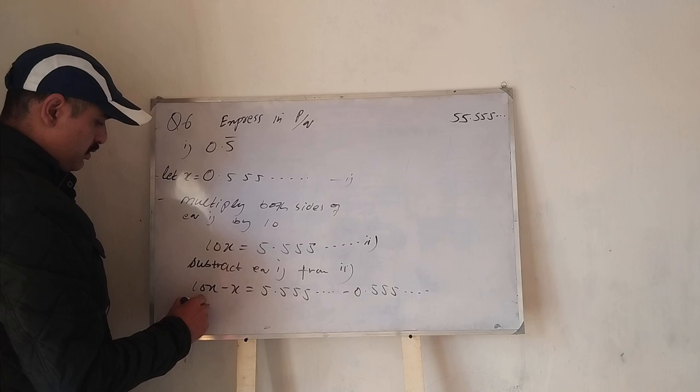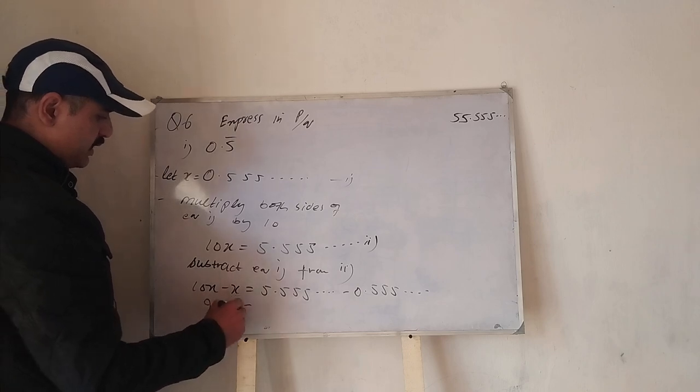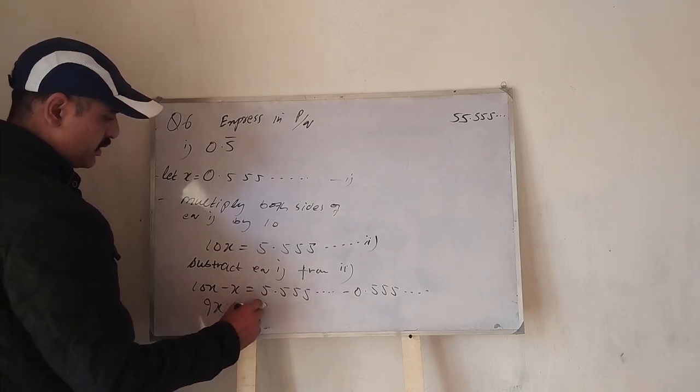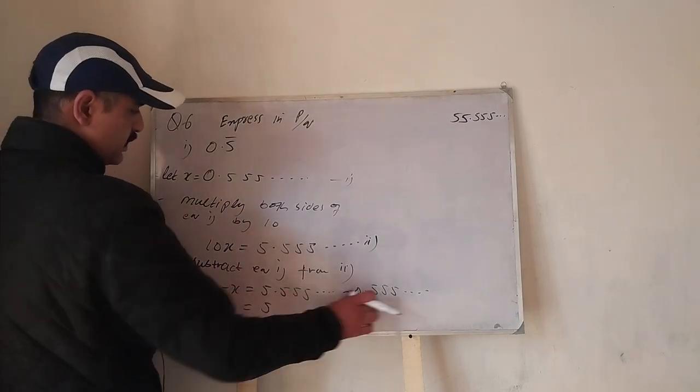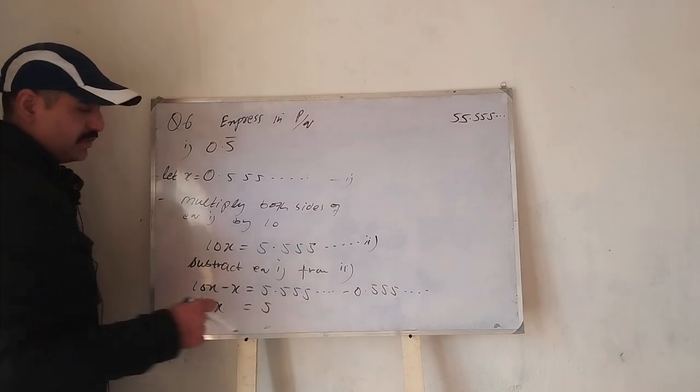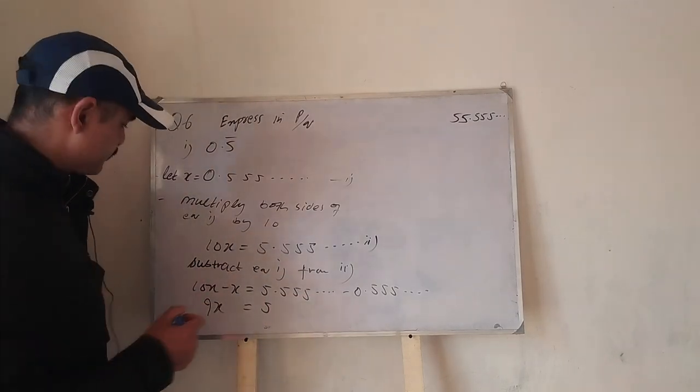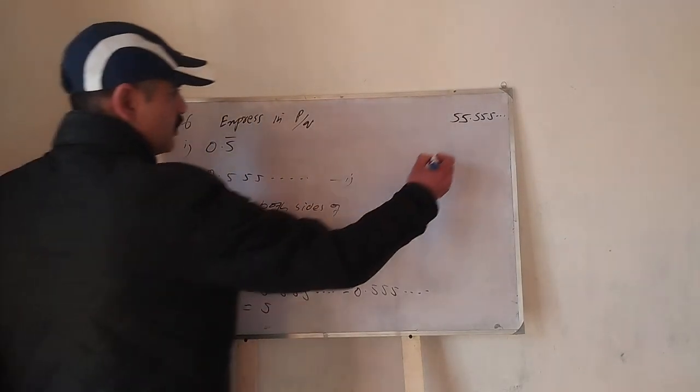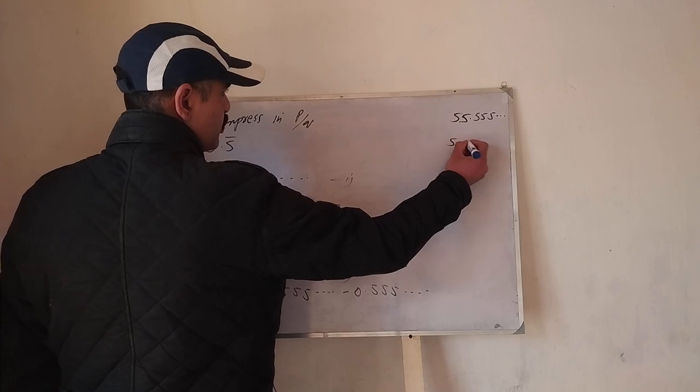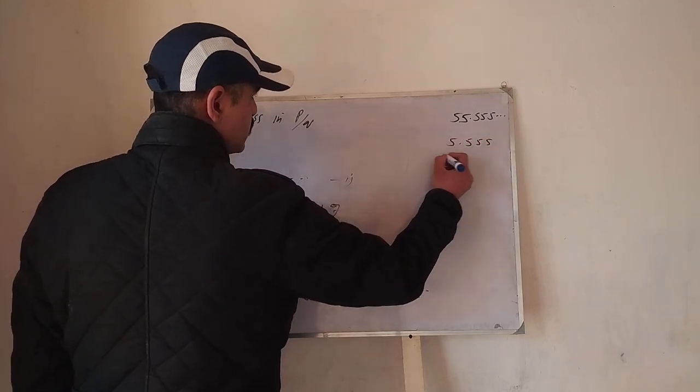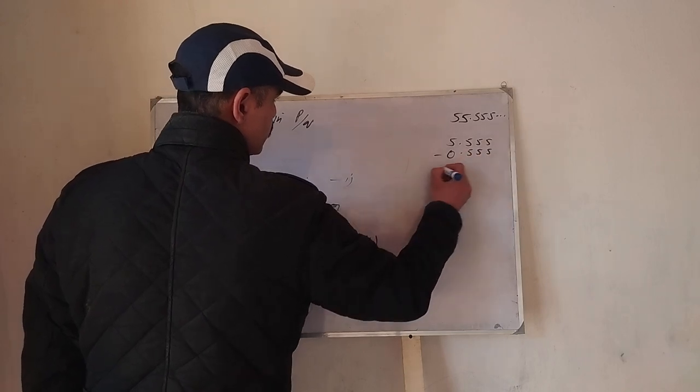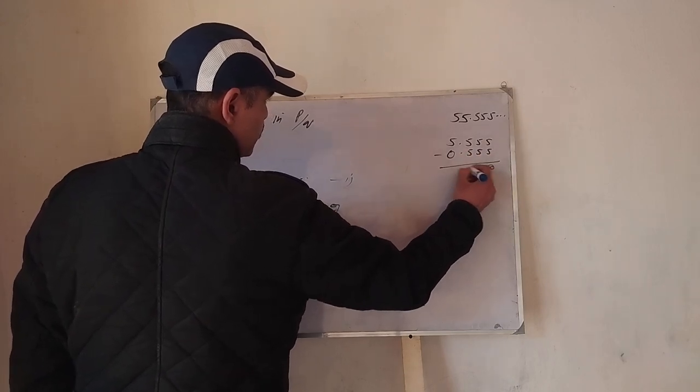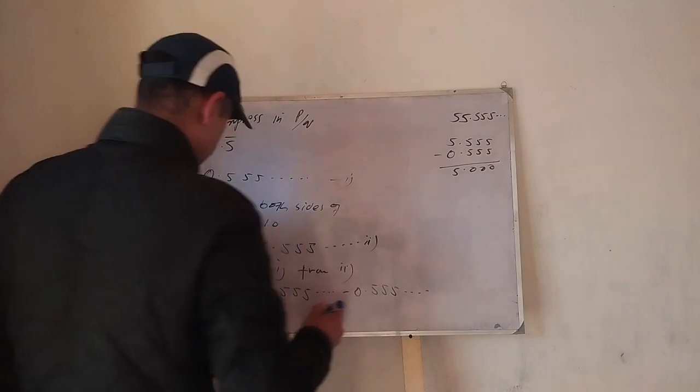And this becomes 5, because these are subtracted from these digits. 5.555 minus 0.555, so these become zero and it will remain 5.